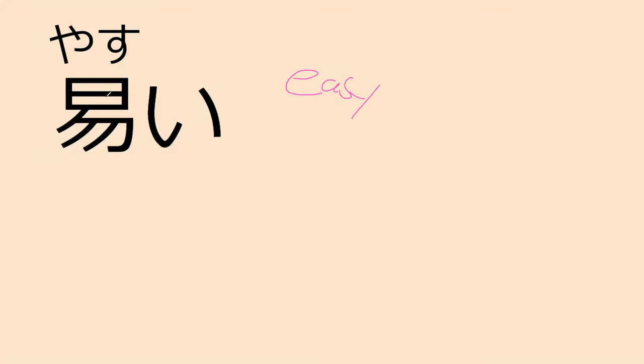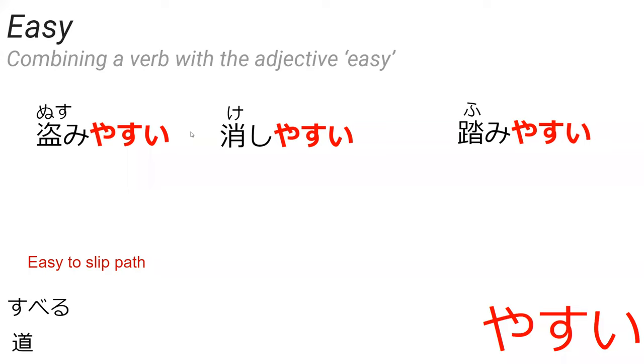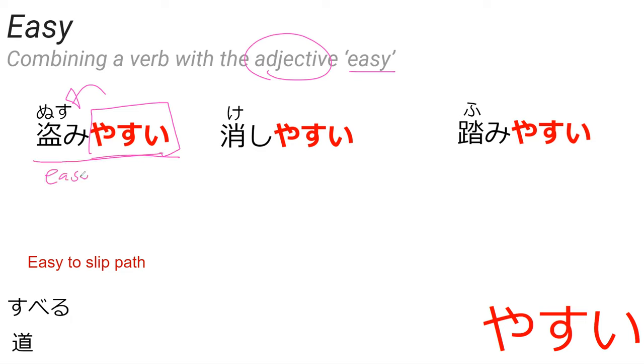Our next word is yasui — you may have heard this before. You will normally not see it with kanji. It means easy — it can also mean cheap, but that has a different kanji. Yasui is kind of taught as a grammar rule, but it's literally the compound word thing we mentioned, where you add the adjective easy and combine it with the stem form of a verb to make the verb easy to do. So nusumi yasui means easy to steal.